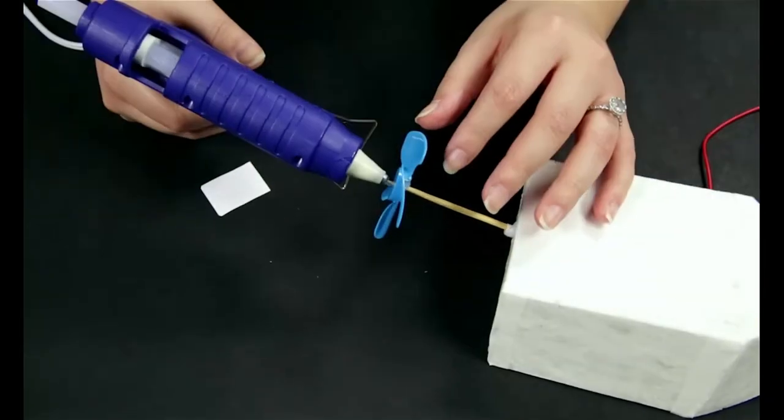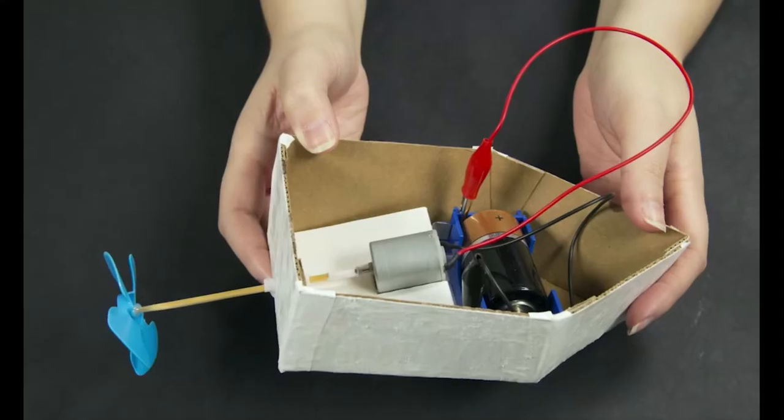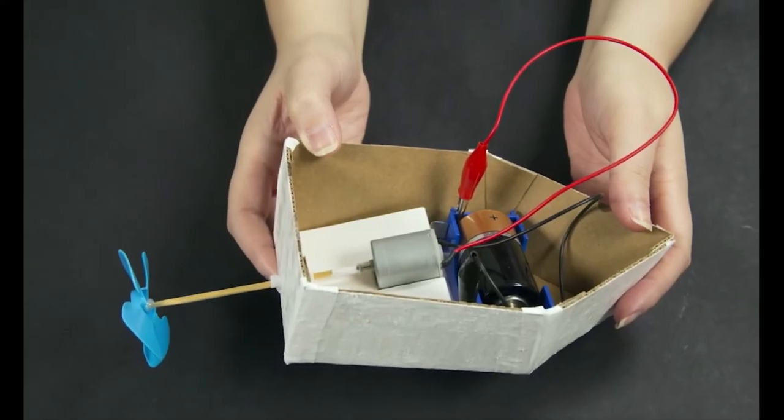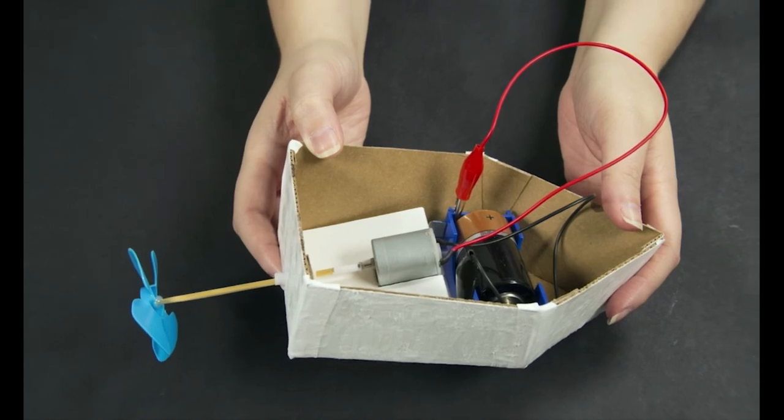Attach the propeller to the point of the skewer. When all of the glue and paraffin is set, you're ready to test the boat.